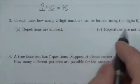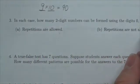In each case, how many two-digit numbers can be formed using the digits 0, 1, 3, 5, 7, and 9?